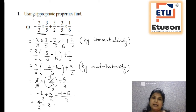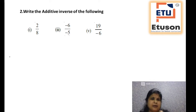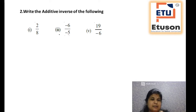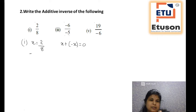Bit 2 of question number 1 is your homework. Now let us go to question number 2. You have to just find out the additive inverse of the following. Additive inverse means which number when added to this number gives the value as 0. So if x is equal to 2 by 8, then your additive inverse will be minus x, because we know x plus minus x is equal to 0. So minus x is equal to minus 2 by 8.